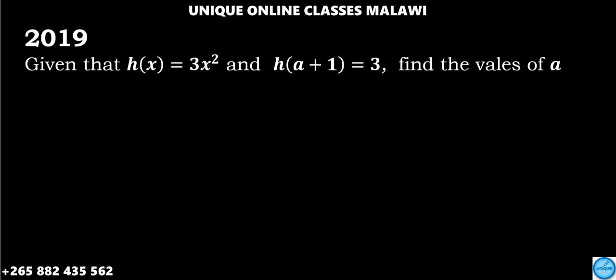Let's see the solution of this one. It was one of the questions from 2019. The question is: given that h of x is equal to 3x squared and h of a plus 1 is equal to 3, we have been asked to find the value of a.